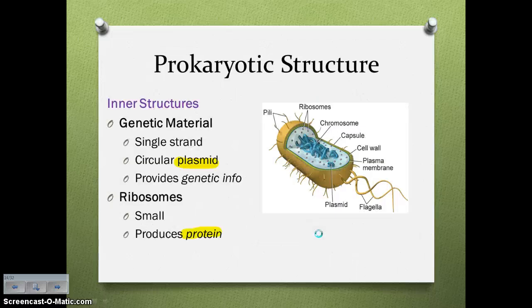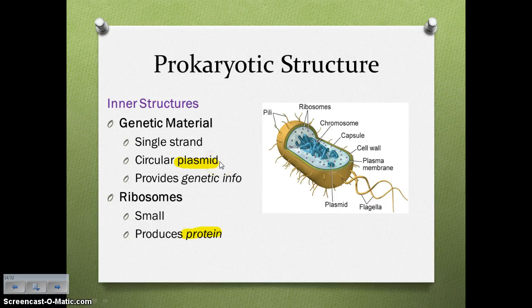For inner structures, we don't have a lot because prokaryotic cells are very simple. We have genetic material and ribosomes. In most prokaryotes, the genetic material exists as a single circular strand called a plasmid, which provides genetic information. Ribosomes are tiny structures — not membrane-bound organelles — made of proteins, used for producing proteins during protein synthesis. Ribosomes start with 'ribs' — ribs give you lots of protein.